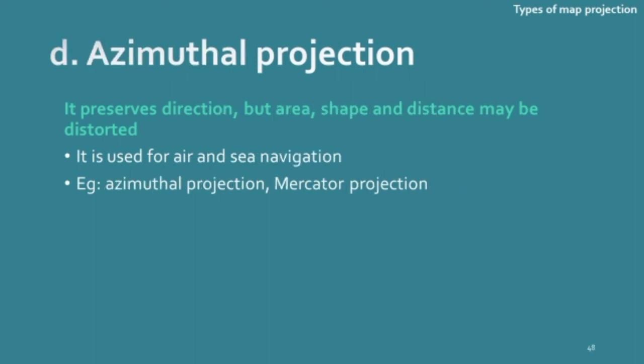The fourth is azimuthal projection, in which except for direction, area, shape and distance are all distorted. It is used for air and sea navigation. So these four — conformal, equidistant, equivalent and azimuthal projections — are the preservation-based classification of map projections.